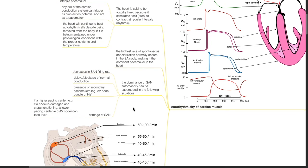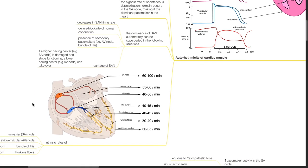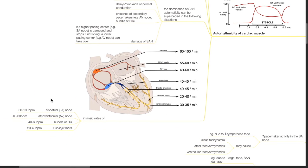However, the dominance of the SA node can be superseded in the following situations: decrease in SA node firing rate, delays or blockade of normal conduction, presence of secondary pacemakers, and damage of the SA node. If a higher pacing center such as the SA node is damaged and stops functioning, a lower pacemaker can take over. The intrinsic rates of the SA node is 60 to 100 beats per minute, the AV node 40 to 60 beats per minute, Bundle of His 40 to 60 beats per minute, and Purkinje fibers 20 to 40 beats per minute.